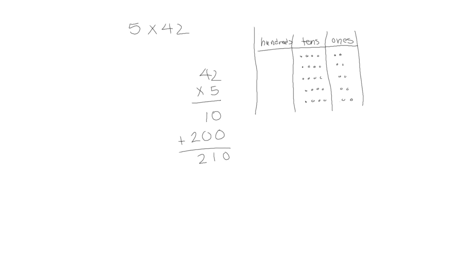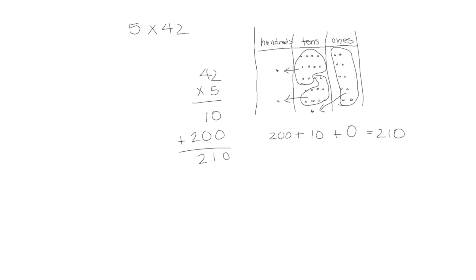Let's see what happens with our place value chart. If we take the 10 ones and exchange them for 1 ten, we're left with 0 ones. If we take 10 tens and exchange them for 100, and another 10 tens and exchange them for 100, we're left with 1 ten and 2 hundreds. So 200 plus 10 plus 0 is 210. We can show this with both the partial products method and the place value chart — two methods for solving these problems.